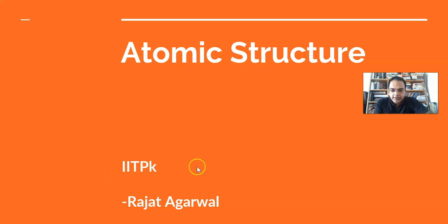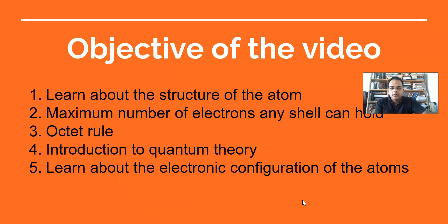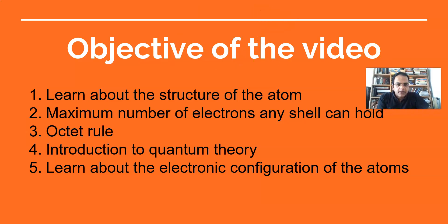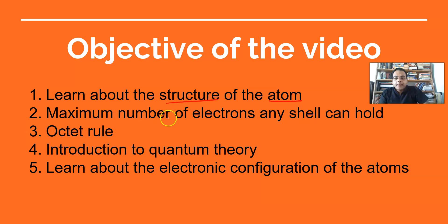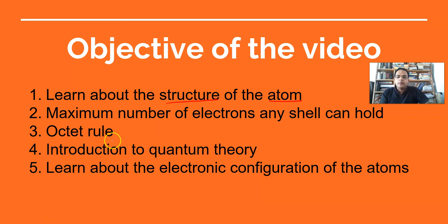Now let's move on to our objectives — what we have to do in this topic must be very clear. In this topic our objective is to learn about the structure of the atom, how it works, and the maximum number of electrons any shell can hold. Some people might know a direct formula for this, which is great, but some people might not know the formula, so I will be helping you out with it.